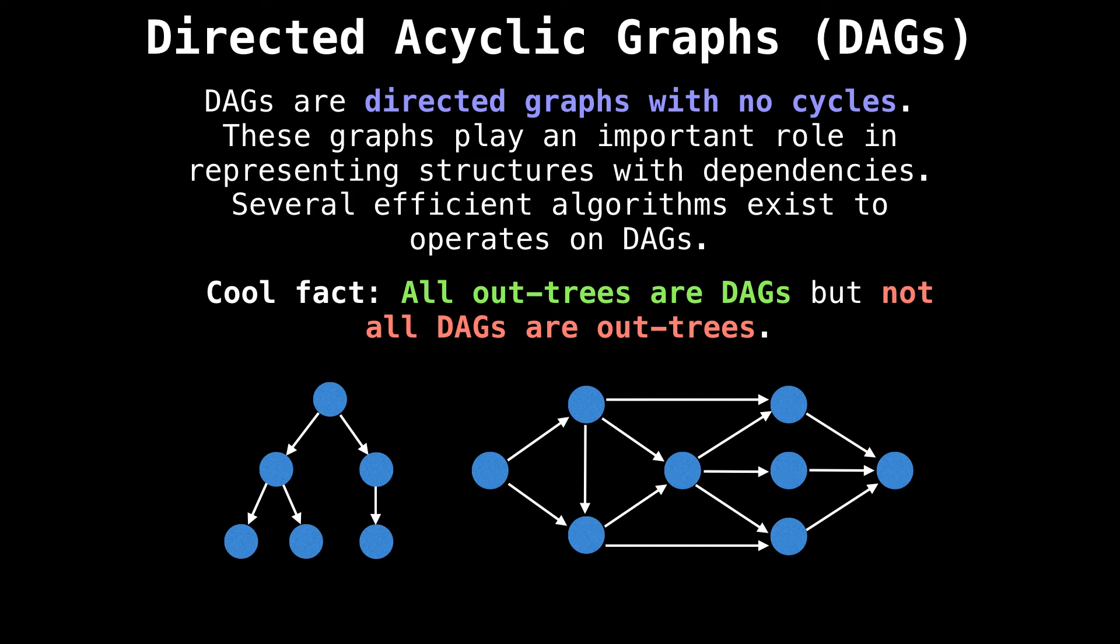For example, a topological ordering of class prerequisites would tell you to take intro biology and intro chemistry before taking a class on, say, genomics.